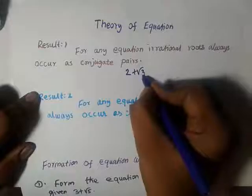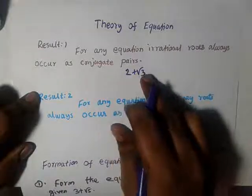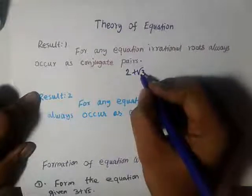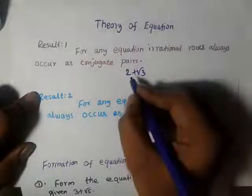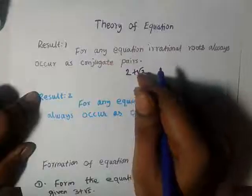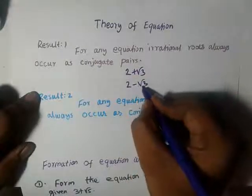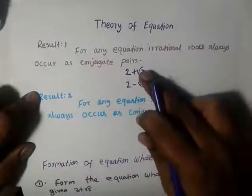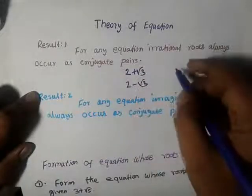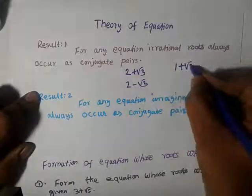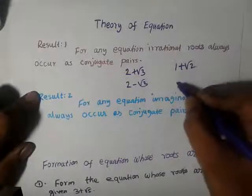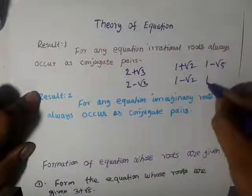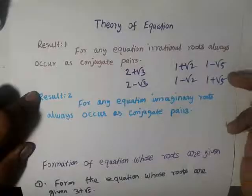2 plus root 3 — so this is a pair, and the conjugate is just a sign change. So if 1 plus root 5 is a root, then its conjugate is 1 minus root 5. And if 1 minus root 5 is a root, then its conjugate is 1 plus root 5.